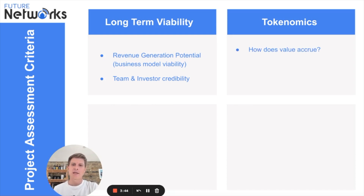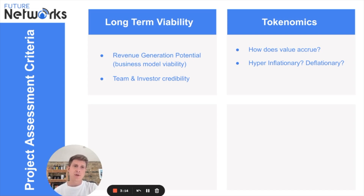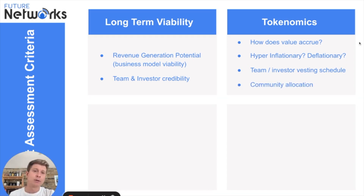Next: tokenomics, or token economics. How does value actually accrue to the token as revenue is generated? Is that value fed back into the token — are token holders benefiting from the company's growth? Are the tokenomics super inflationary, with loads of tokens emitted daily that could drive the price down by flooding the market? Is there a deflationary mechanism like token burning? And is there a vesting schedule for the team and investors — if they all vest at once, say two years down the line, and dump on the market, that could cause a big price drop.